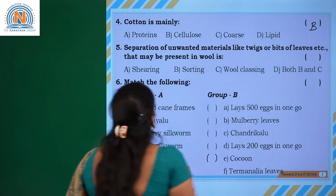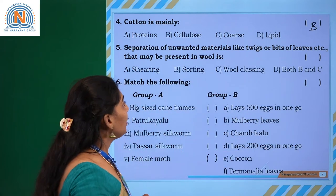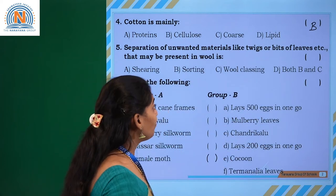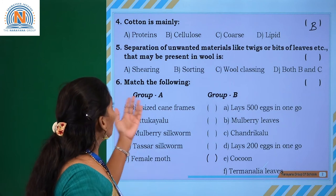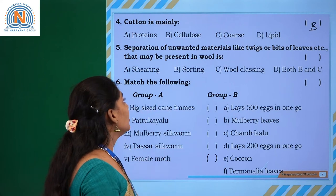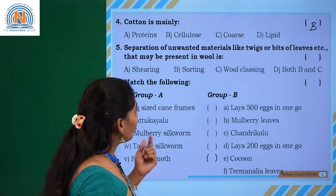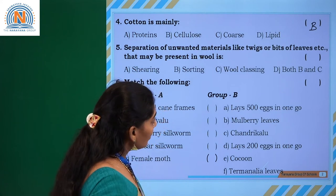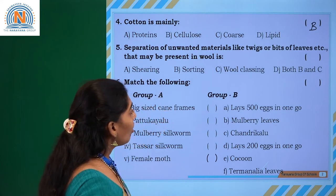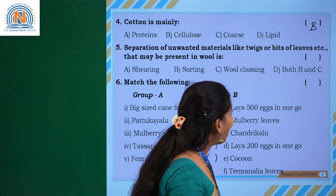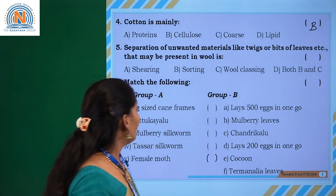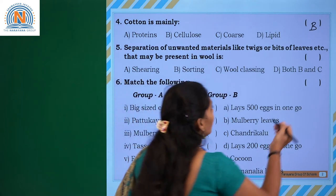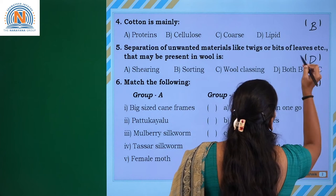Separation of unwanted materials like twigs or bits of leaves that may be present in the wool is called - shearing, sorting, or wool classing. The answer is option B.